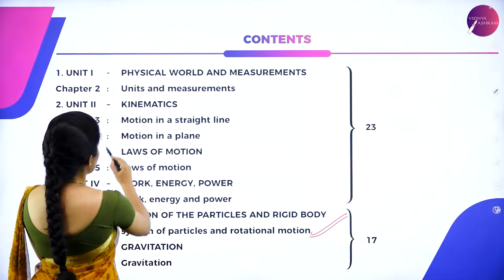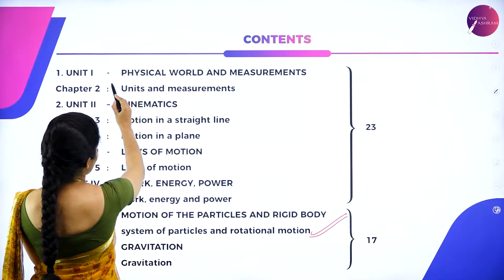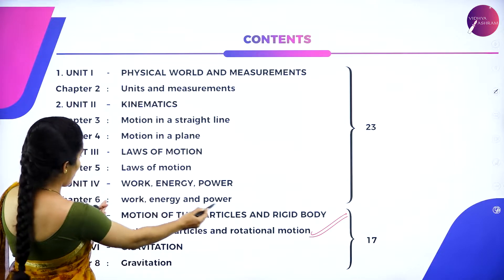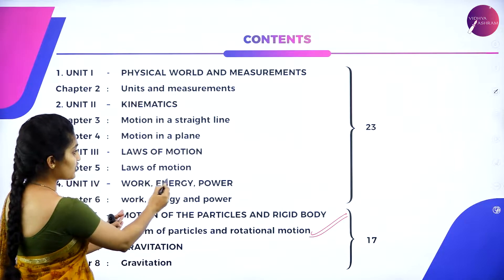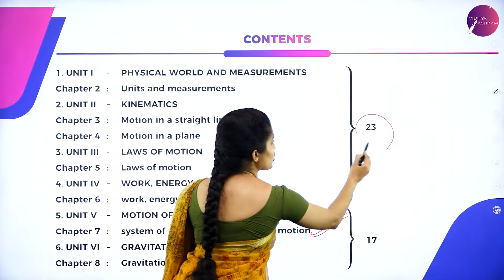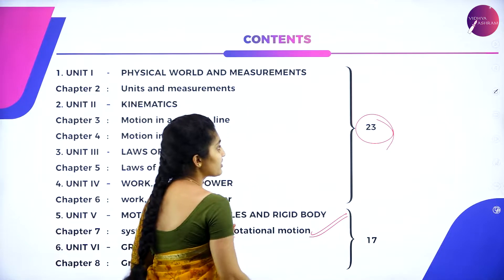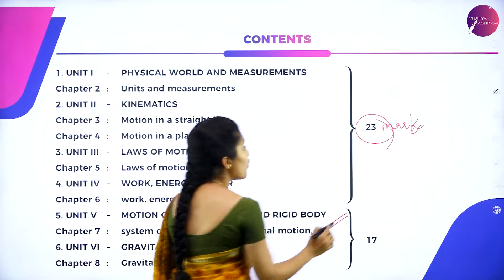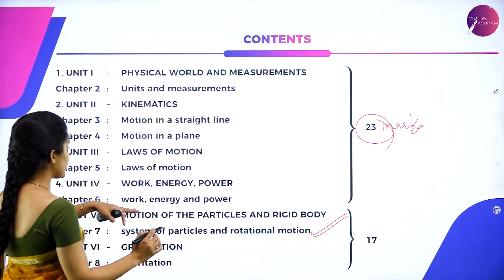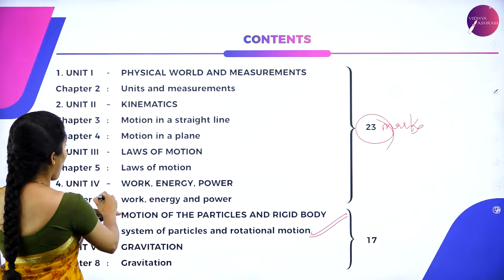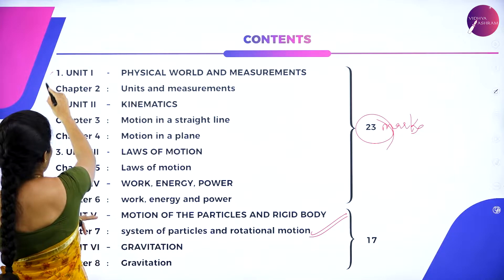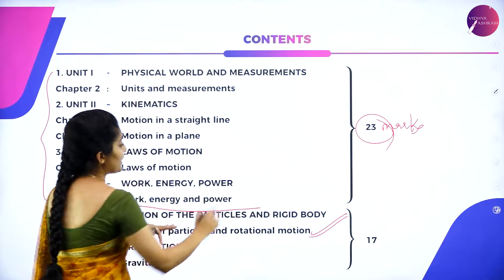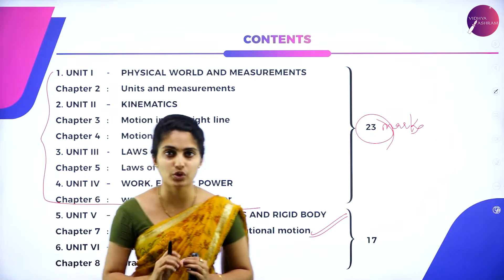From Unit 1, Physical World, through Unit 4, Work, Energy and Power, it consists of 23 marks. This is the marks allotted for those 4 units, covering all 6 chapters.